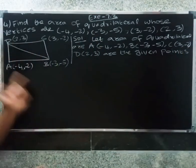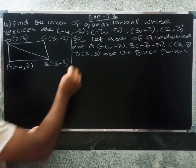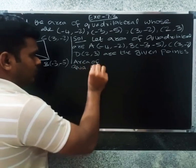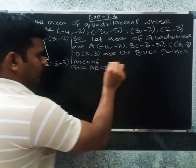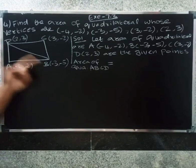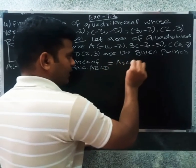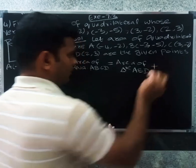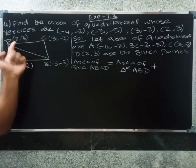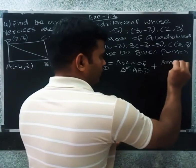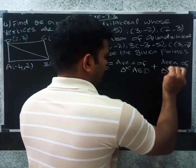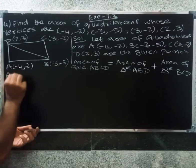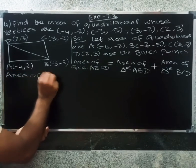The area of quadrilateral ABCD is divided into two triangles. So the area of quadrilateral ABCD equals the area of triangle ABD plus the area of triangle BCD.